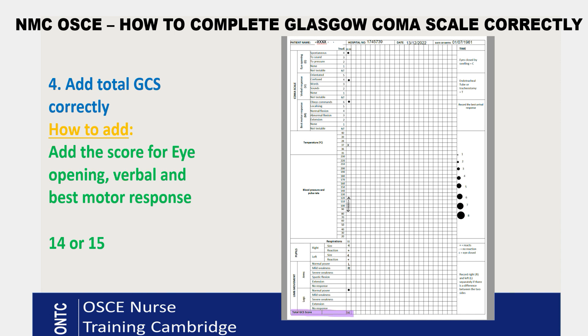The only thing that may be slightly abnormal is confusion, so your score should be 14 or 15. If you're getting less than 14, it means you've made a plotting error — for example, placing the dot in the wrong box. Perhaps instead of marking confusion, you placed the dot in the box below. Check again to make sure it's plotted correctly. Your score should be 14 if they're confused, or 15 if they're not. And don't forget to write the total at the bottom of the chart.